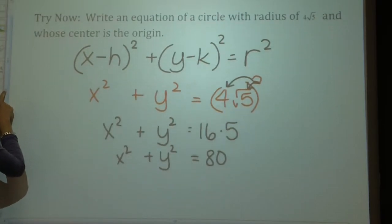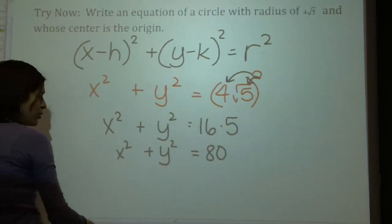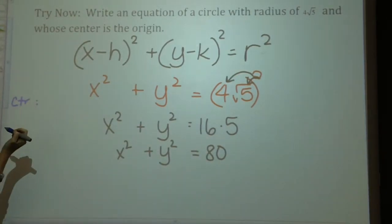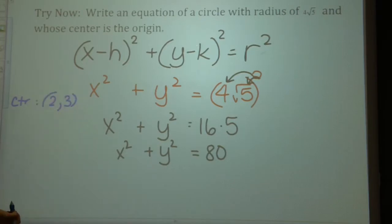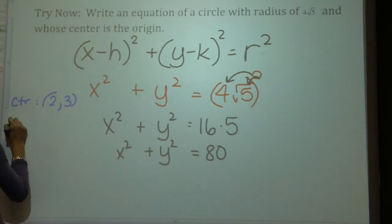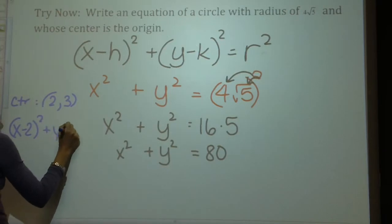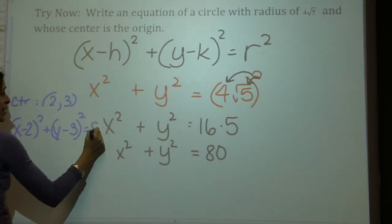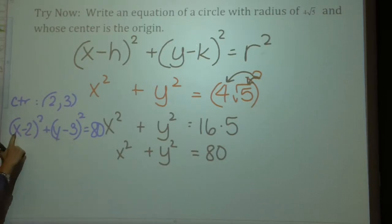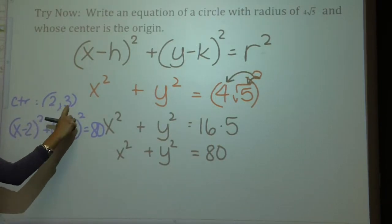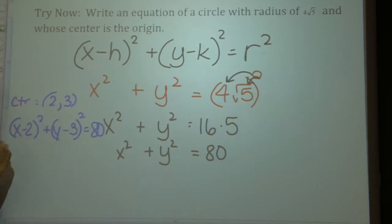The only way I can make that harder is by giving you a center that's not the origin. What if I gave you the center as (2, 3)? All you do is plug it in. The equation would look slightly different: x minus 2 squared plus y minus 3 squared equals 80. It just has the h and k in there. Remember, h and k always means change, change — see the difference between the center and what it looks like in the equation.